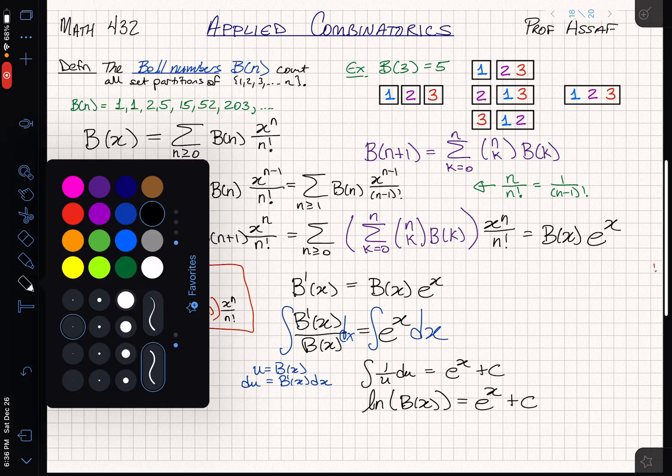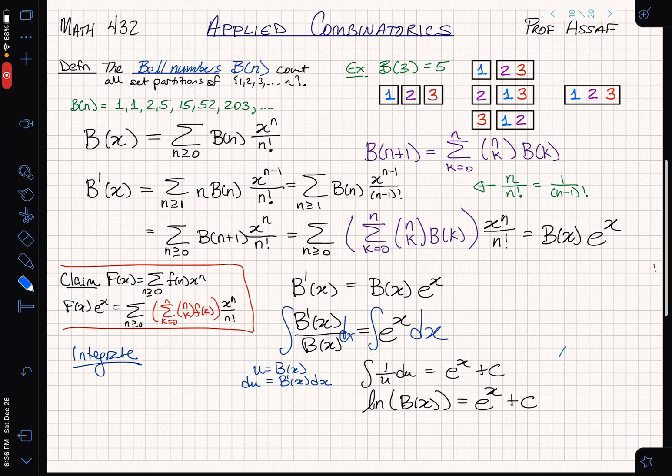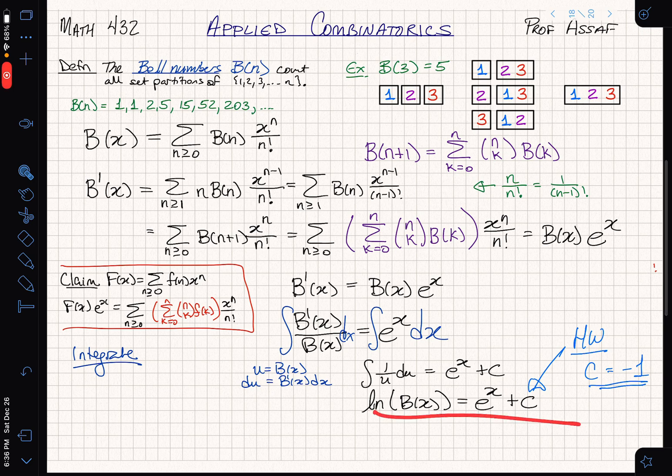When I integrate e to the x, hopefully you remember this part from calculus, I'm just going to get e to the x plus a constant. Integrating 1 over u, that's pretty easy. That's the natural log of u, which of course was B(x), equals e to the x plus c. What's c? Now it's time for more homework. c is actually equal to minus 1. How can you figure that out? You have everything that you need to figure it out now based on what you know about B(x) and the terms in it and what you know about the series e to the x.